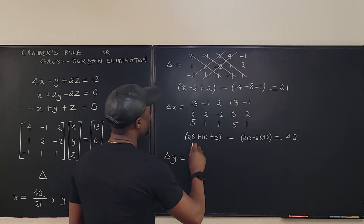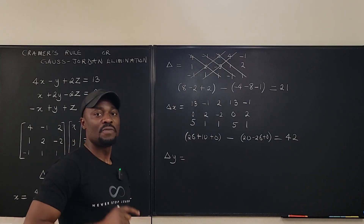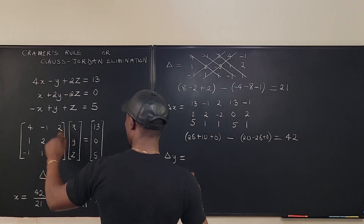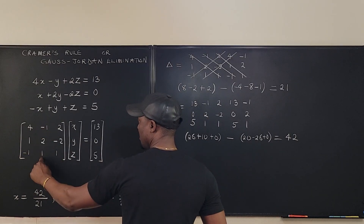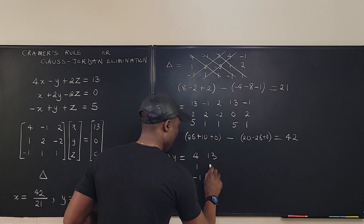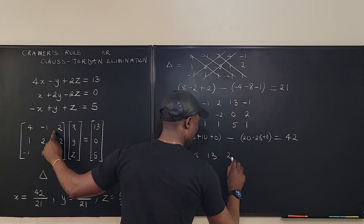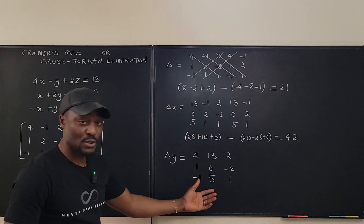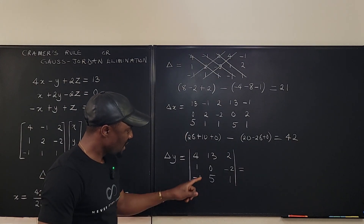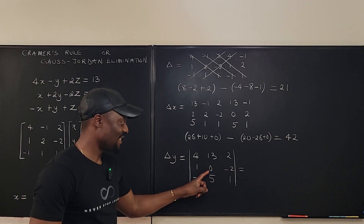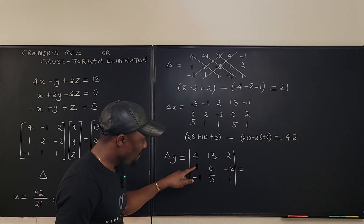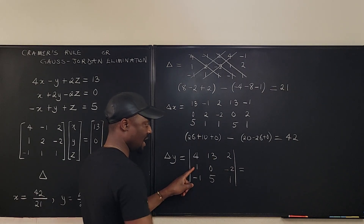Now let's do Delta Y using cofactor expansion — I'll leave Delta Z to you. For Delta Y, I leave the first and third columns alone and replace the middle column with 13, 0, 5. So the matrix is: first column 4, 1, -1; middle column 13, 0, 5; third column 2, -2, 1. I'll expand about the middle column because of the zero, which makes it easier. The sign pattern is plus, minus, plus, so the middle-column element is minus.